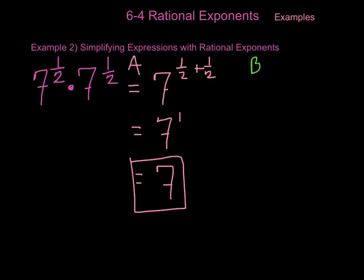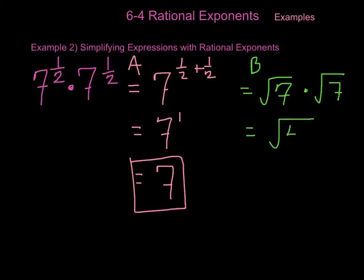Another way to do this is by converting to a radical first. 7 to the 1 half power would convert to the square root of 7, multiplied by 7 to the 1 half power, which is also the square root of 7. When multiplying radicals with the same index, we can multiply the radicands together, giving us the square root of 49, which we know to be 7. And you're simplified and done.